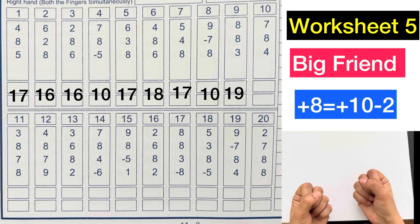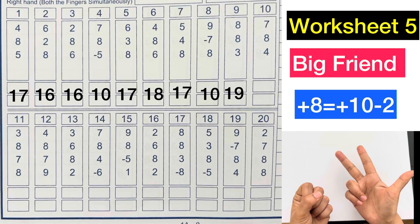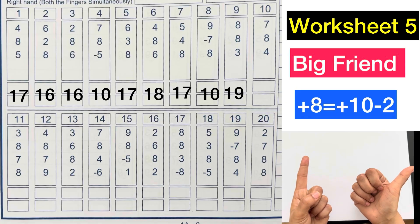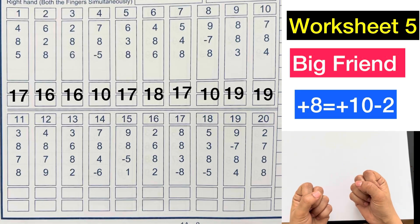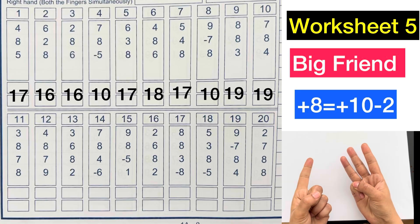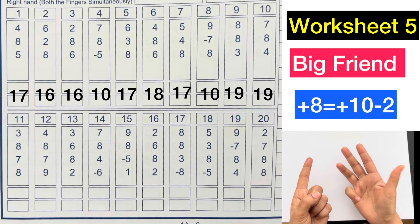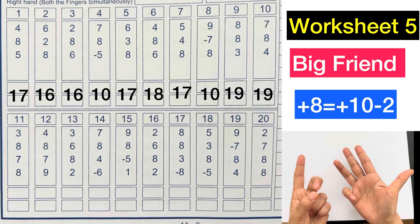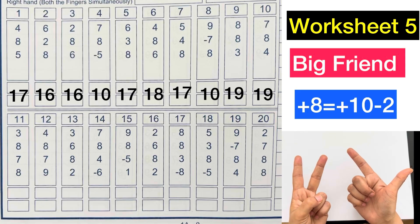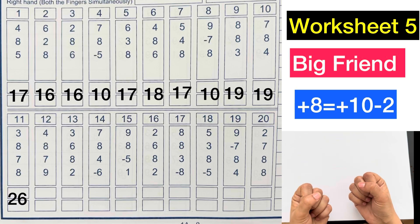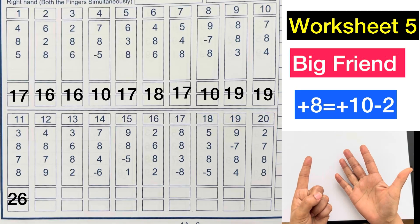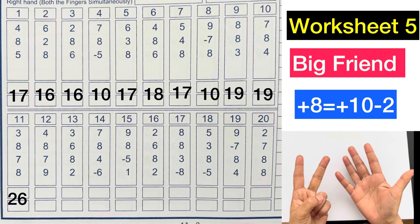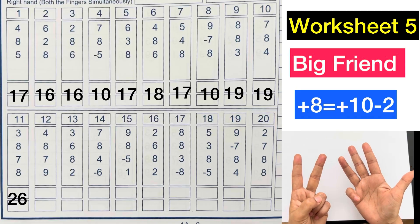7 plus 8 plus 10 minus 2 plus 4, answer is 19. 3 plus 8 plus 10 minus 2 plus 7 plus 8 plus 10 minus 2, answer is 26. 4 plus 8 plus 8 plus 10 minus 2 plus 7 plus 9 plus 10 minus 1, answer is 28.